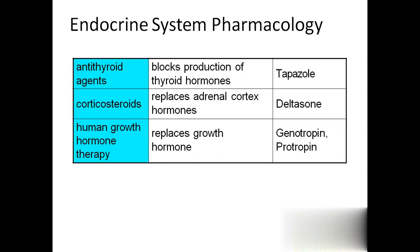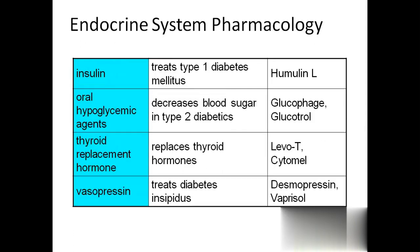Growth hormone replacement therapy: if a child's growth is too small - by age 10 they should be around 3.5 to 4 feet; if below that, the doctor may prescribe growth hormones. Insulin is used to treat type 1 diabetes mellitus. Oral hypoglycemic agents are used to treat type 2 diabetes mellitus. Thyroid replacement hormones replace thyroid hormones. Vasopressin is used to treat diabetes insipidus.